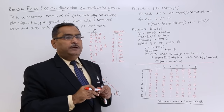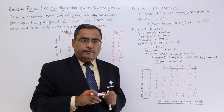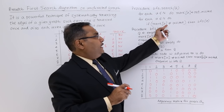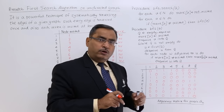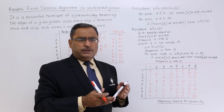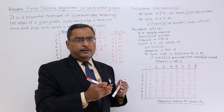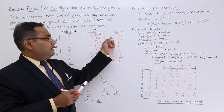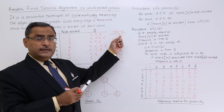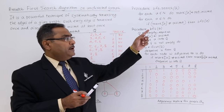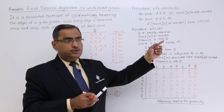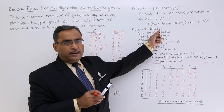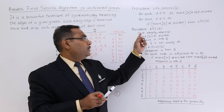Next, for each V belonging to N, if mark of V is not equal to visited, let us consider the source vertex as 1. Mark of 1 is not equal to visited, so BFS(1) is being called. This V is 1 right now.